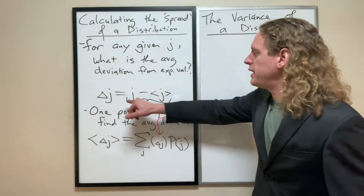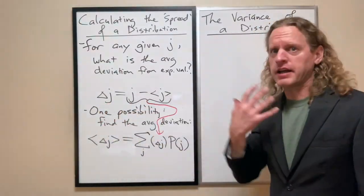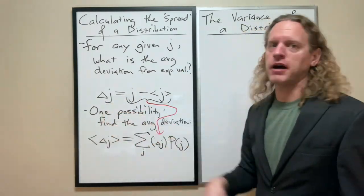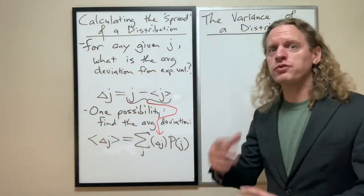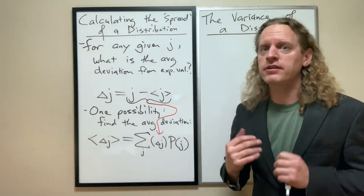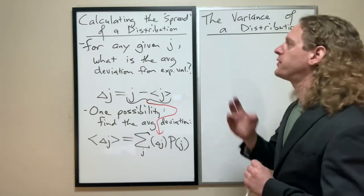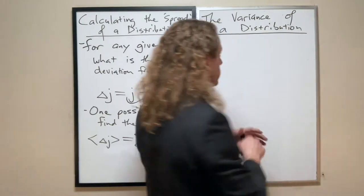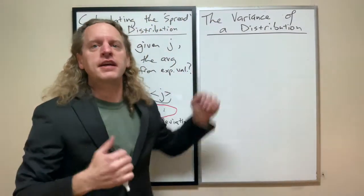All right, as we have seen, if we take this function, which I'm informally calling the deviation from the expected value, and if we try to ask what is the average deviation, we're going to end up with an answer of zero for precisely the reasons that I just gave.